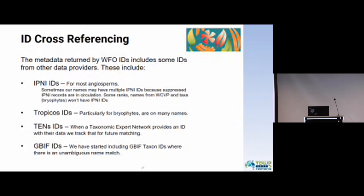We also cross-reference IDs. The metadata returned by WFO IDs includes IDs from other data providers, including IPNI IDs for most angiosperms. Sometimes WFO names may have multiple IPNI IDs because some suppressed IPNI records are still in circulation. Some ranks also don't have IPNI IDs, like some subspecies. Some names from the World Checklist of Vascular Plants still don't yet have IPNI IDs, and some taxa — particularly bryophytes — don't have IPNI IDs.